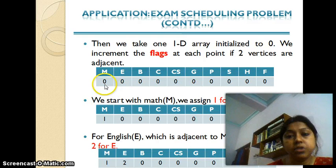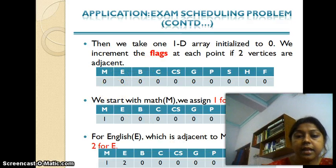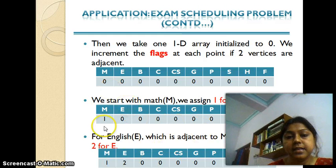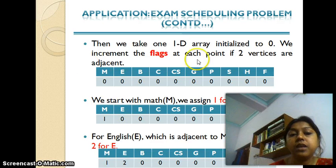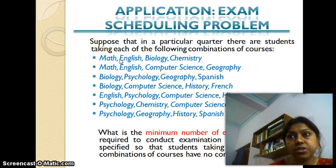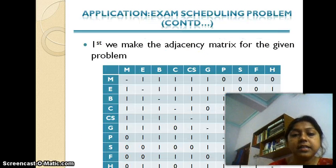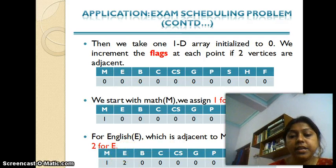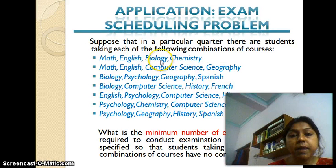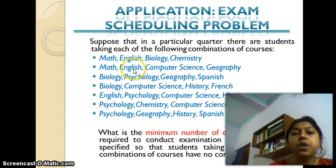For the solution, I take a 1D array initialized to zero — 10 integers for the 10 subjects — and increment a flag only when two vertices are adjacent. Starting with Maths: flag is incremented to one, so Maths is assigned color one. English is adjacent to Maths, so I cannot use one; I assign color two to English. Bio is adjacent to both Maths and English, so I cannot use one or two; I assign color three to Bio.